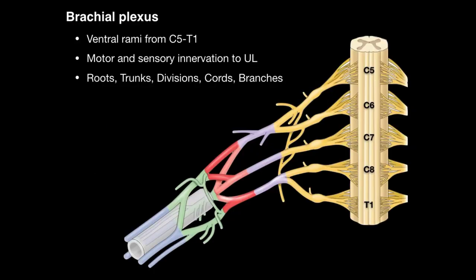The brachial plexus is formed by the ventral rami from C5 to T1 spinal cord levels, as indicated in this picture. They provide motor and sensory innervation to the upper limb muscles and skin. The ventral rami form these different parts: roots, trunks, divisions, cords, and branches — in that sequential order.